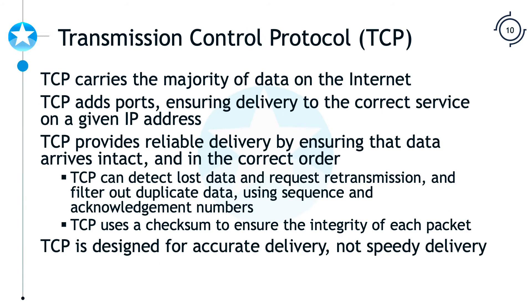TCP is used to carry most of the communication across the internet and internally. The nice thing with TCP is it ensures reliable delivery — if packets are dropped, we will resend those packets, and if they arrive out of order, they will be reassembled in the proper order. TCP is designed for accurate delivery, and there is going to be extra overhead because we need to establish reliability, but that is the trade-off.